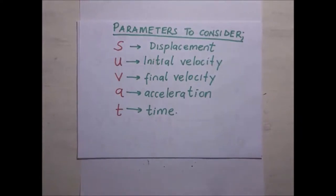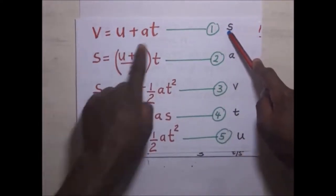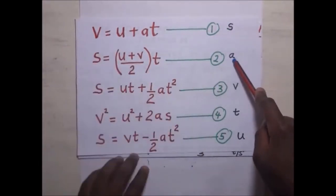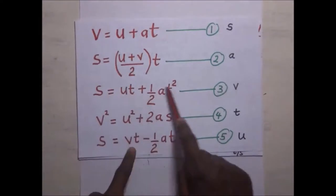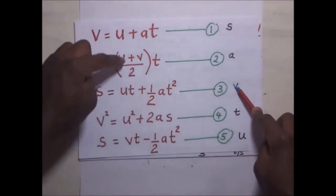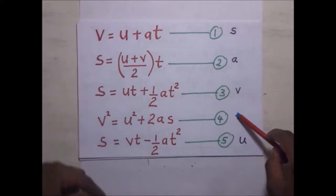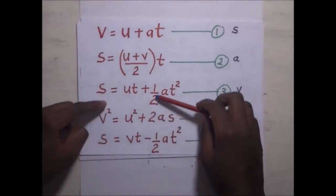As we derive these equations, we must keep in mind that certain parameters will be deliberately left out. For example, the first equation of motion has no displacement (s). The second equation is missing acceleration (a). The third is missing final velocity (v). The fourth is missing time (t). The fifth is missing initial velocity (u).